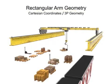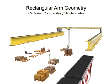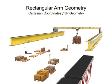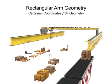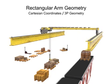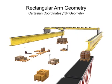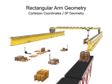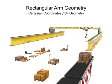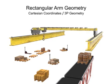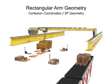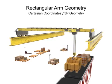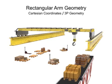This type of geometry is most commonly used with pick-and-place or large overhead-mounted robots. Rectangular arm geometry robots can only move linearly in each direction. An overhead crane robot is a good example of this type of motion.